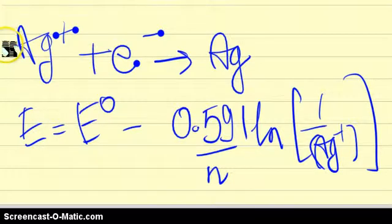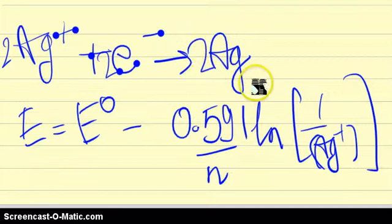Now, if I multiply this whole thing by, say, 2, I make this 2 electrons, 2Ag+ and finally I get 2Ag over here as well.